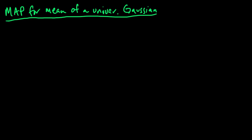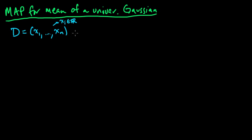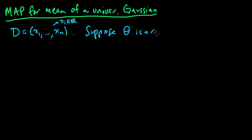Let's set things up for computing a MAP. We need some data — we assume we're given some data x1 to x10, where these xi's are just in R, points coming from a univariate Gaussian. The first step is to assume some data, the second step is to assume a joint distribution on a parameter theta and the data. So we're going to define a joint distribution, and we will suppose that theta is a random variable.